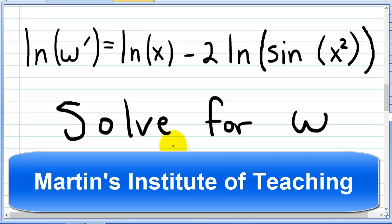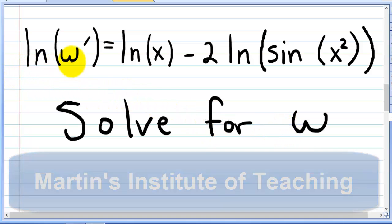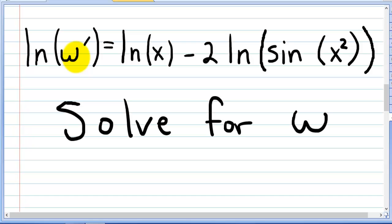Welcome to Martin's Institute of Teaching. Here we're going to be solving for w. We have the natural log of w prime is equal to the natural log of x minus 2 times the natural log of sine of x squared.